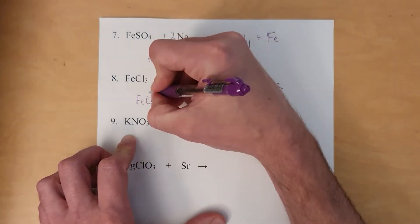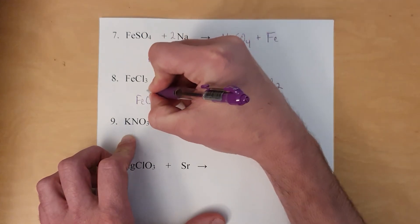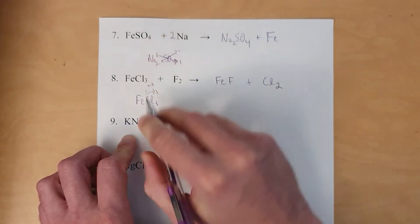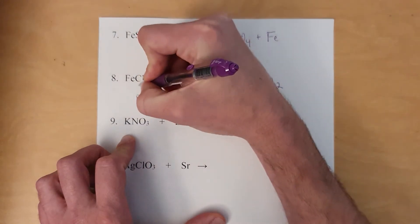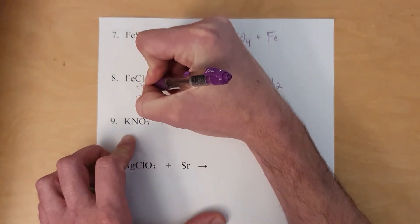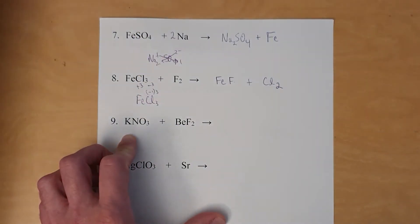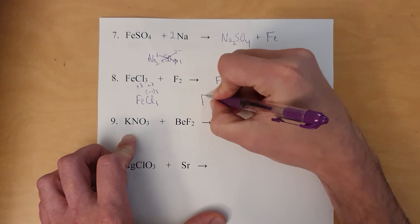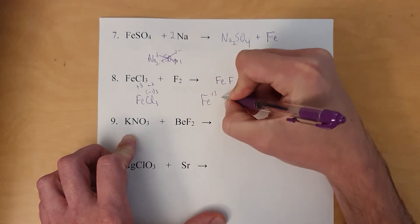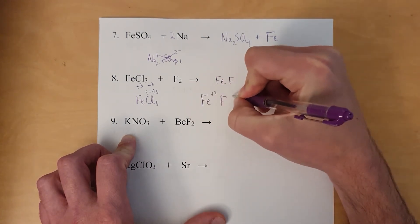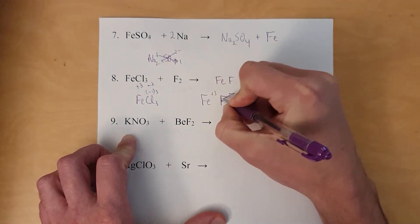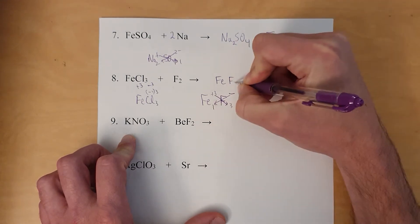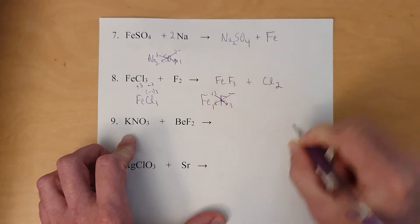We figure the charge of iron by saying each chlorine is a −1, and there are three chlorines for a total −3 charge, which means the iron must match it by being a +3. Therefore this iron is a +3 charge. So if you have iron with a +3 charge paired with fluorine at a −1 charge, the formula will have one iron and three fluorines — it looks like FeF₃.